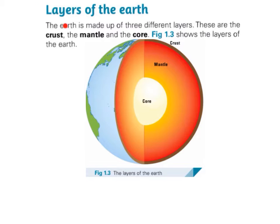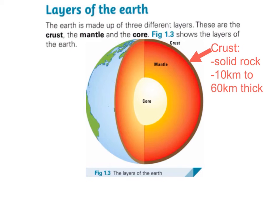Layers of the Earth. The Earth is made up of three different layers: the crust, the mantle, and the core. The crust is the outer layer or skin of the Earth. It's made up of solid rock and it is up to 10 kilometres thick underneath the ocean, and 60 kilometres thick underneath the continents.